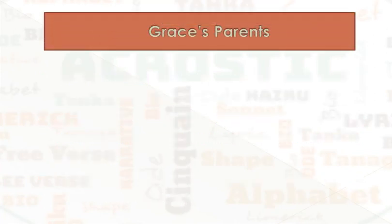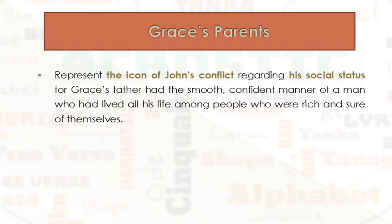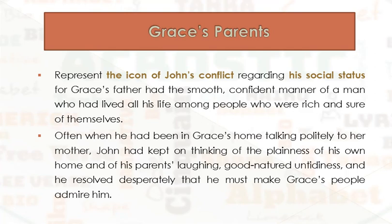Finally, we have Grace's parents, who are important characters because they represent the source of John's conflict regarding his social status. Grace's father had the smooth, confident manner of a man who had lived all his life among people who were rich and sure of themselves. Often, when he had been in Grace's home talking politely to her mother, John had kept thinking of the plainness of his own home and of his parents' laughing, good-natured untidiness. And he resolved desperately that he must make Grace's people admire him.